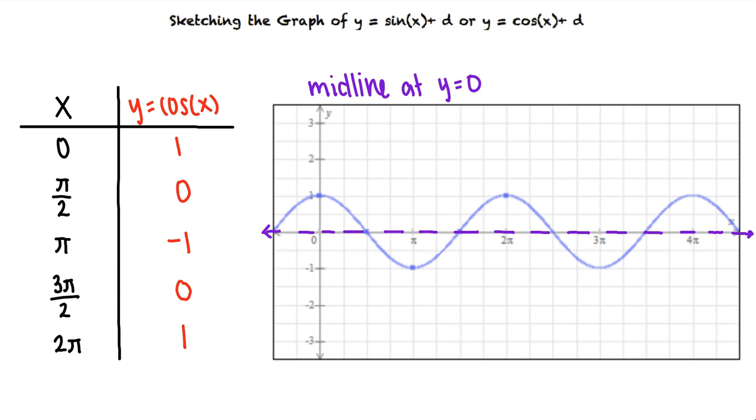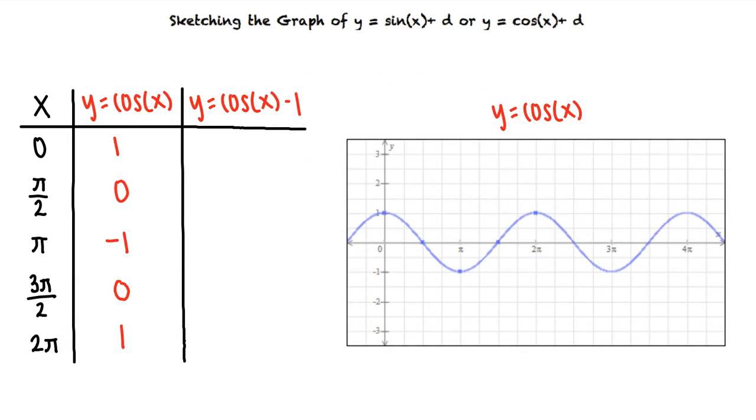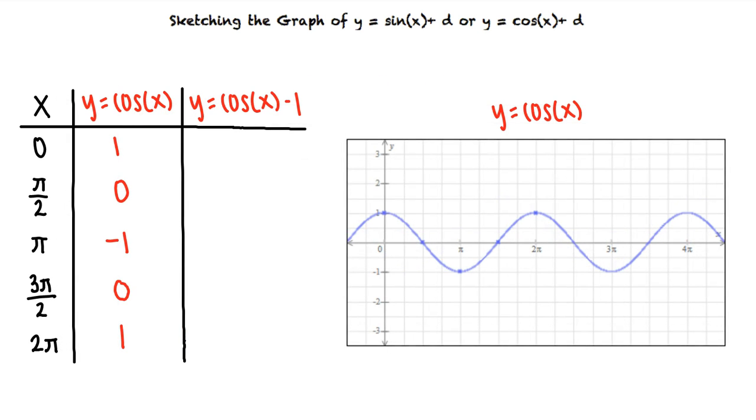Now let's say we wanted to graph y equals cosine of x minus 1. To obtain our new y-coordinates, we subtract 1 from the y-coordinates of the points from the original function. When we do this, our entire graph is translated down by one unit.